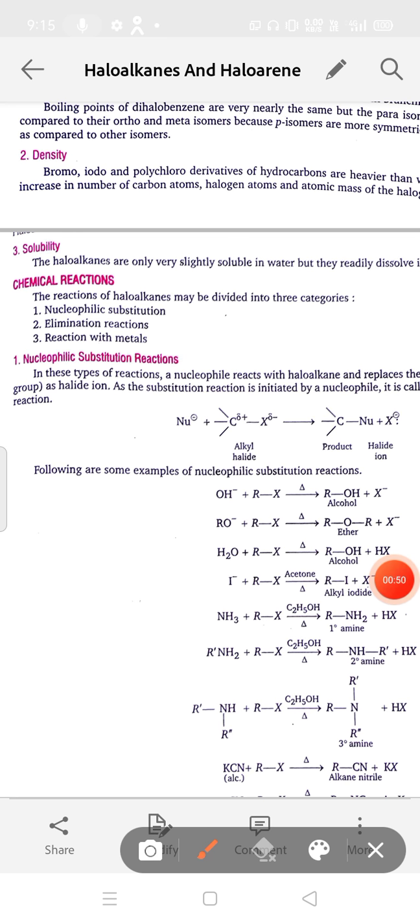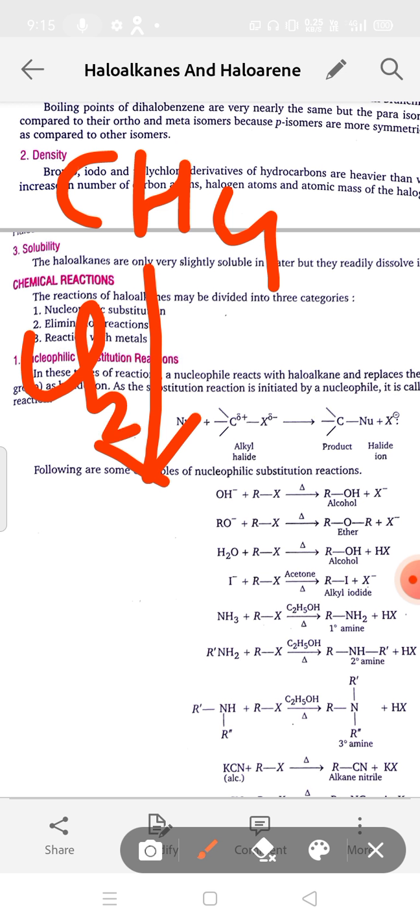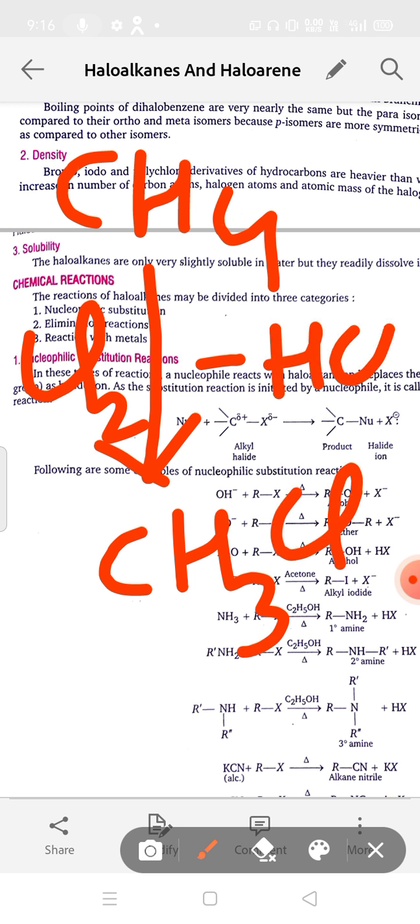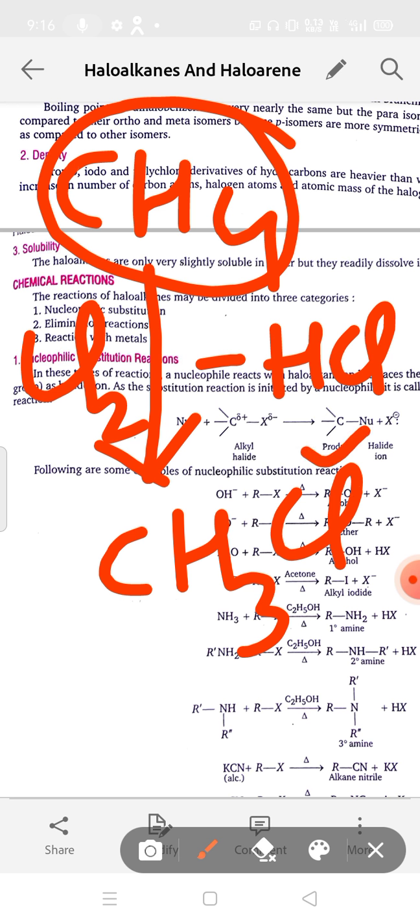For example, I am taking here, suppose I have taken CH4. CH4, when react with Cl2, it gave CH3Cl with the byproduct of HCl. That means the hydrogen atom from CH4 is removed by the Cl atom. It is the substitution reaction.